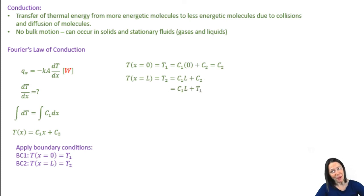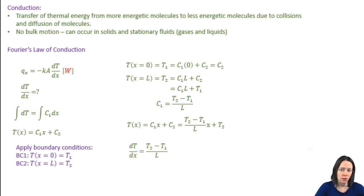Substituting the second boundary equation into the equation for T(x) at x equals L, we can solve for C1. And plugging those values for C1 and C2 in, we have an expression for T as a function of x. We also have an equation for dT/dx, which verifies Fourier's law for 1D steady state heat transfer that we had before.